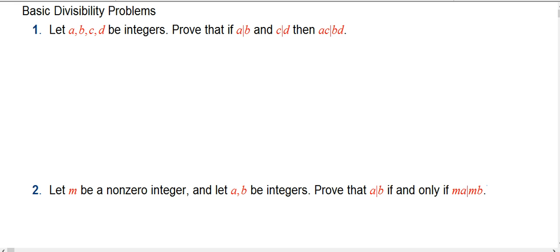So first, if you have four integers, we'll call them A, B, C, and D, and we're assuming that A divides B and C divides D, then we want to show that A times C divides B times D.